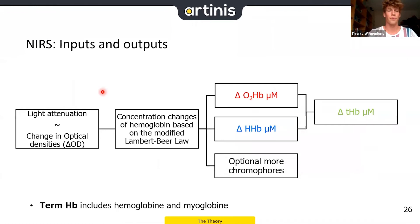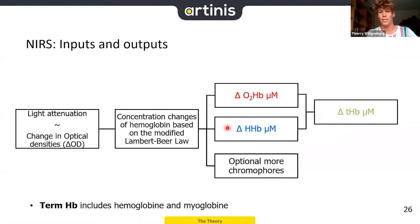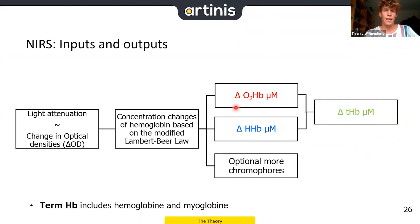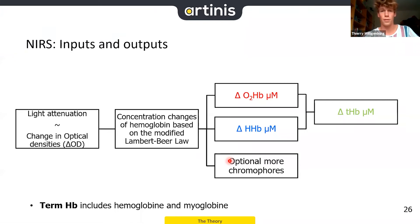With NIRS we measure light attenuation, and based on the modified Beer-Lambert law we can quantify changes in oxyhemoglobin and deoxyhemoglobin. Adding these gives total hemoglobin. Note these are changes relative to a baseline. Also noteworthy: we cannot distinguish between hemoglobin and myoglobin — myoglobin takes approximately 5–10% of the signal, but during exercise your changes happen in hemoglobin while myoglobin remains stable. At 850nm we quantify oxyhemoglobin; at 760nm, deoxyhemoglobin. Optionally, other chromophores such as cytochrome oxidase can also be measured.